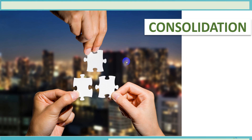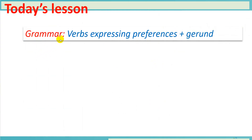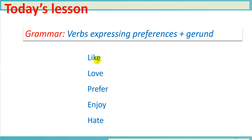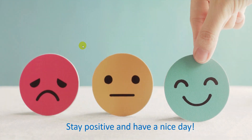Let's consolidate our lesson. Today we studied grammar: verbs expressing preferences — like, love, prefer, enjoy, hate — followed by a verb ending in -ing. That is the end of the lesson. Thank you for listening.